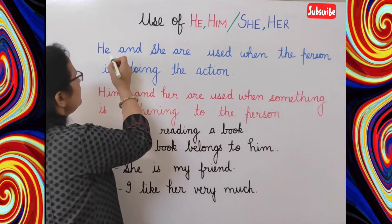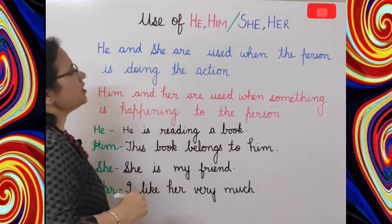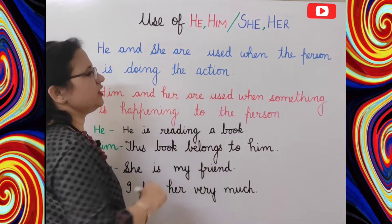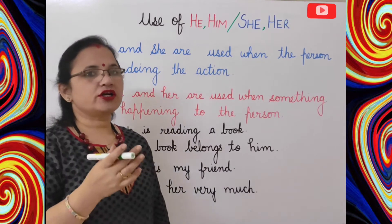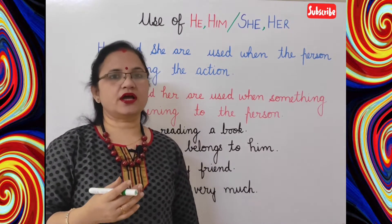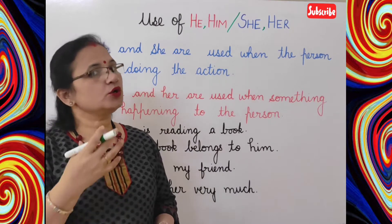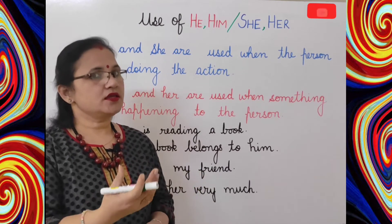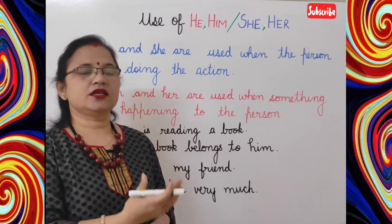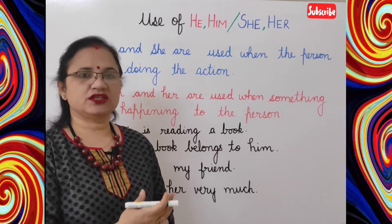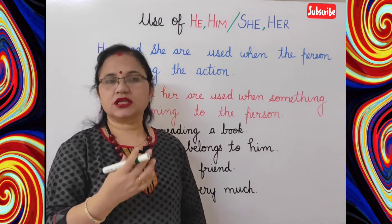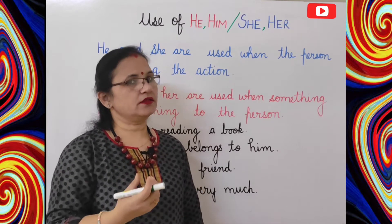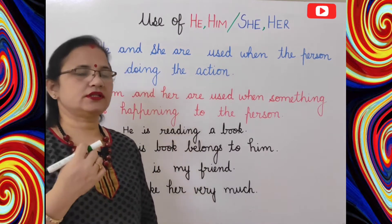Now when do we use he and she? He and she are used when the person is doing the action — jab koi vyakti khud action kar raha hai, khud kaam kar raha hai. For example: he is playing, he is dancing, she is reading, she is writing. So he or she ka use tab hota hai jab karne wala khud kaam kar raha hai.